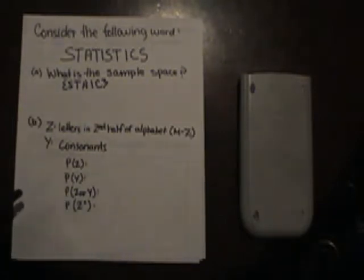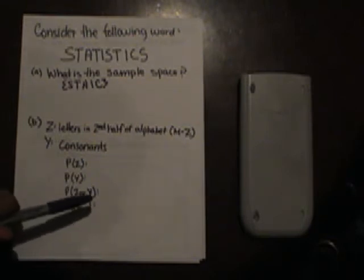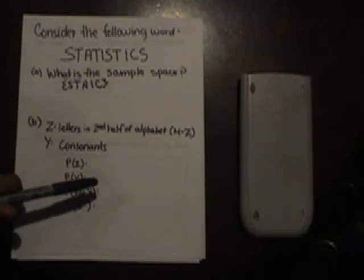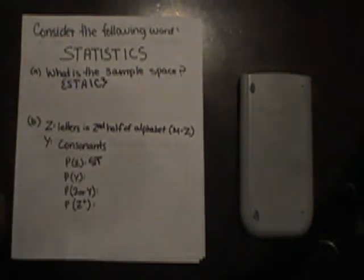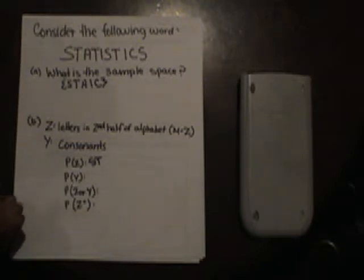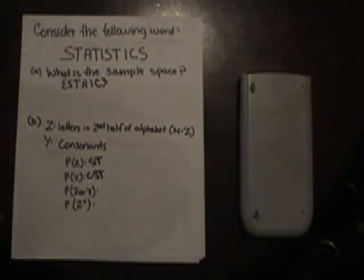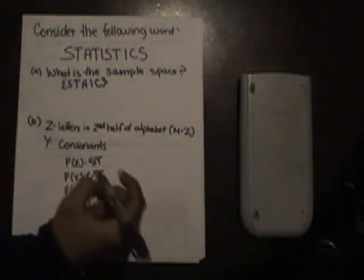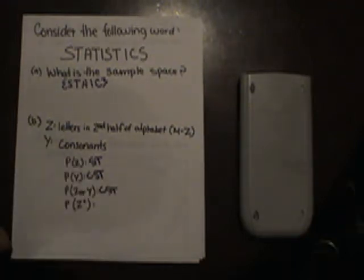Next question. Z are the letters in the second half of the alphabet, which are N through Z, and Y are consonants. The probability of Z is S and T, since those are in the second half of the alphabet. And the probability of Y are C, S, T. The probability of Z or Y is C, S, T. And the probability of Z complement is C, A, I.